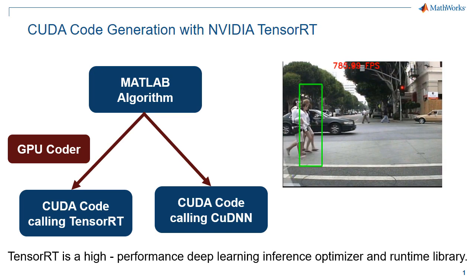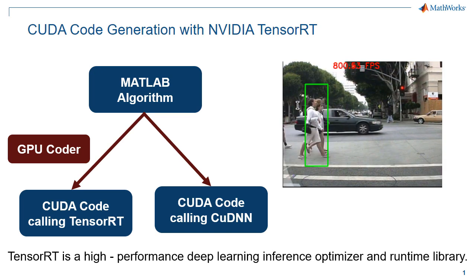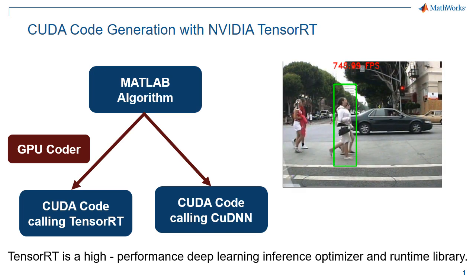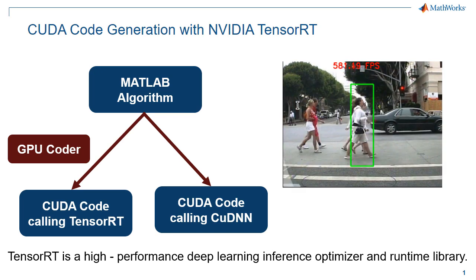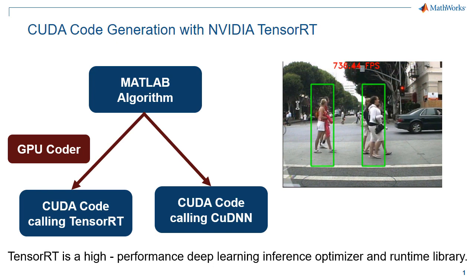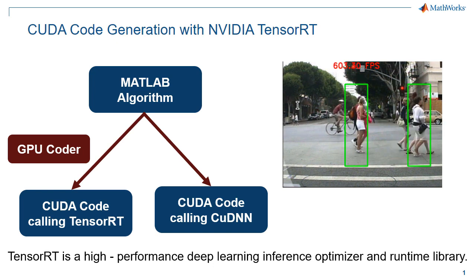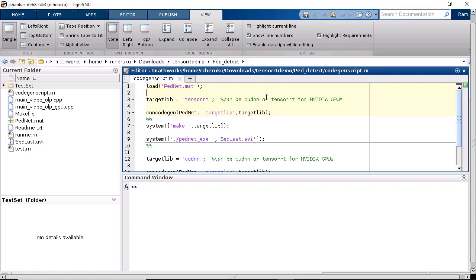Here we have a deep learning network for object detection that is trained to detect pedestrians. In order to deploy it for inference, first let me generate the CUDA code using GPU Coder.